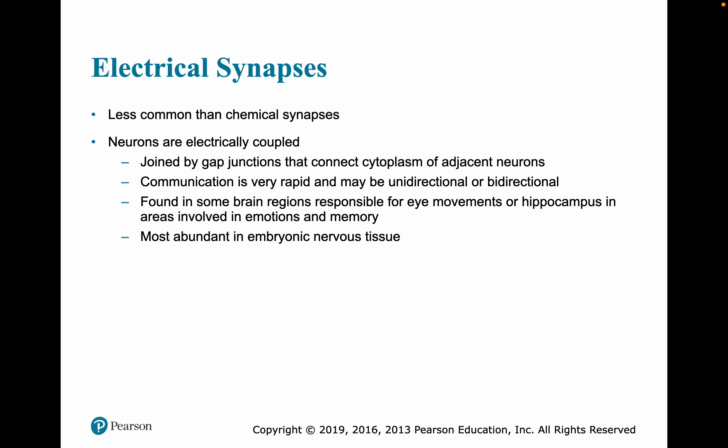The other type is electrical synapses. They are much less common than chemical synapses. Here the neurons are electrically joined by gap junctions that connect cytoplasm to adjacent neurons. This allows for very rapid communication and can be unidirectional or bidirectional. We find electrical synapses in some brain regions responsible for eye movement and the hippocampus, which is involved in emotion and memories. They are much more abundant in embryonic nerve tissue.